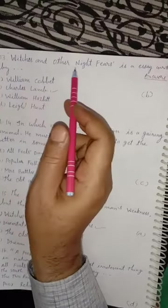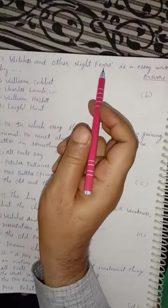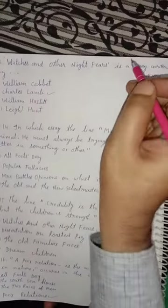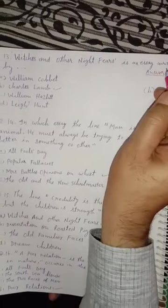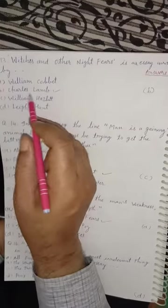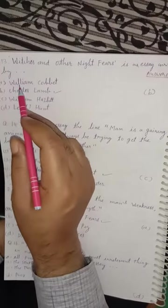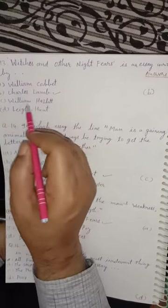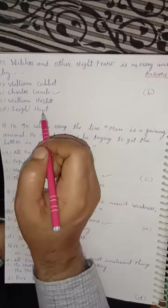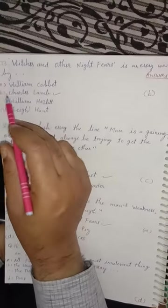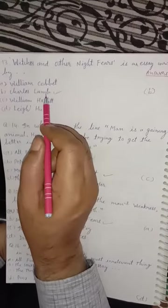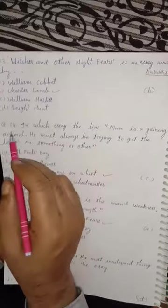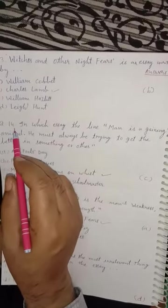Question 13. 'Witches and Other Night Fears' is an essay written by Charles Lamb. The other options are William Cobbett, William Hazlitt, and Leigh Hunt, but the answer is Charles Lamb — option B is correct.